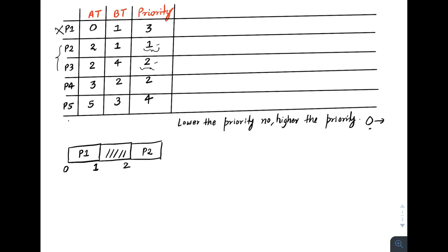P2's burst time is one, so it runs from two to three and terminates. At time three, P3 and P4 are both in the ready queue. Their priorities are the same, so we apply FCFS — we check arrival times and schedule the one that arrived first. P3 arrived at time two and P4 at time three, so P3 is scheduled. P3's burst time is four, so it runs from three to seven and terminates.